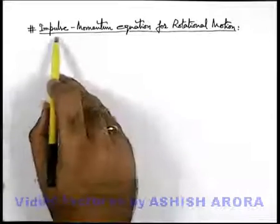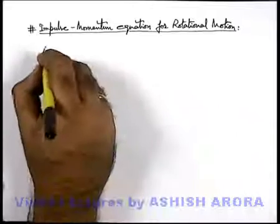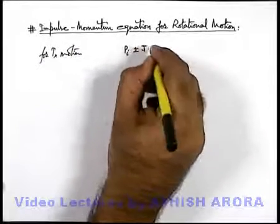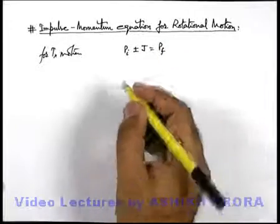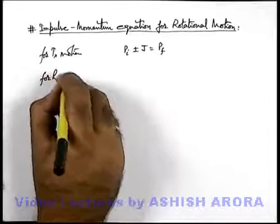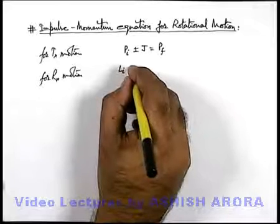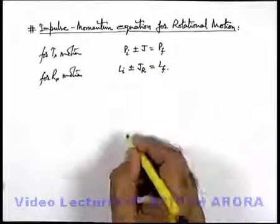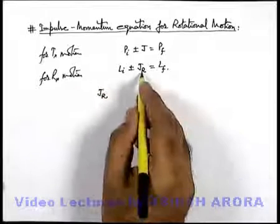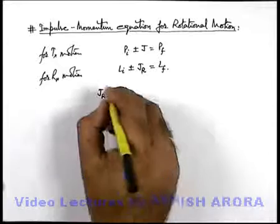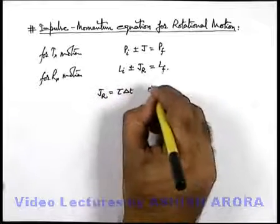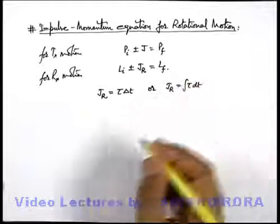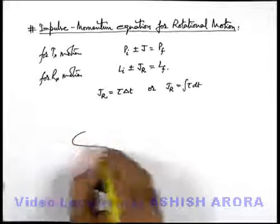In sequence, we'll talk about the impulse-momentum equation for rotational motion. For translational motion, we already studied that initial momentum of the system plus or minus the impulse imparted equals the final momentum. Similarly, for rotational motion, initial angular momentum plus or minus the angular impulse equals the final angular momentum. Here the angular impulse J_R can be written as tau delta t for constant torque, or as the integration of tau d t for a time-varying torque applied over the given duration.